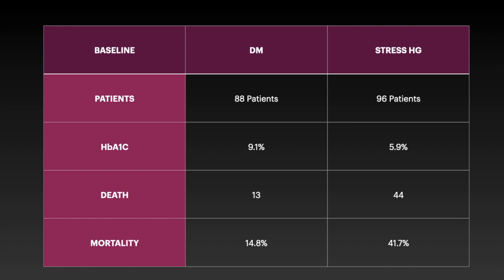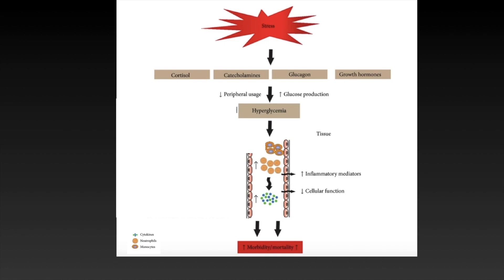Among the 77 deaths, people with diabetes had a 4-fold higher risk of mortality compared to non-diabetics. Comparing diabetes versus stress hyperglycemia, although patients with diabetes had poorer glycemic control, mortality was approximately 3 times higher in stress hyperglycemic patients compared to diabetic patients. To explain this: during stress, the body releases cortisol, catecholamines, glucagon, and growth hormones, resulting in decreased peripheral glucose usage and increased glucose production — leading to hyperglycemia, elevated inflammatory mediators, and increased cytokines, neutrophils, and monocytes, causing morbidity and mortality. Therefore, uncontrolled stress hyperglycemia carries higher risk, and early triaging with aggressive management is ideal.